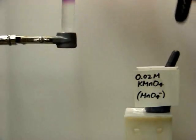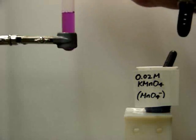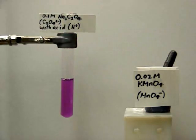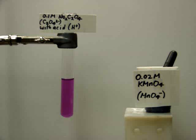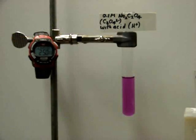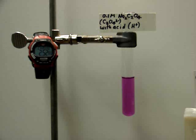Let's give it a shake. And we'll leave it sit for a while, see how long it takes the purple color to disappear. As you can see, about three minutes after we started the timer, the color is still purple.